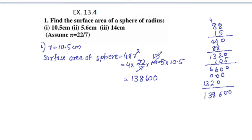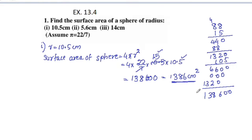Placing the decimal point — 2 digits are on the left. The result is 1386 centimetre square.